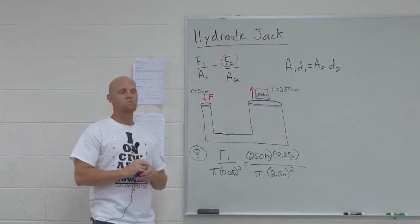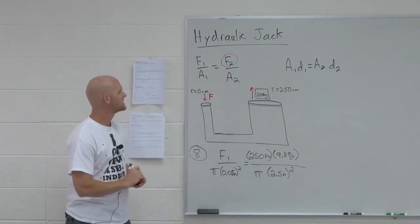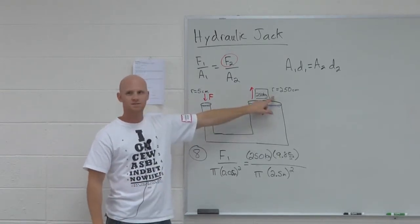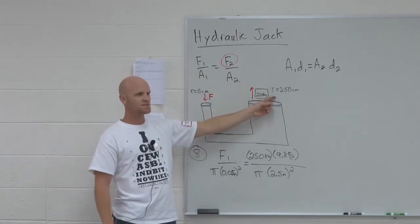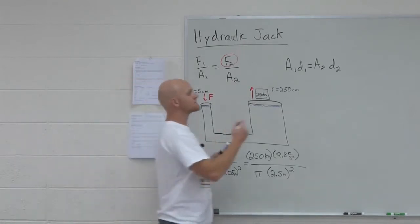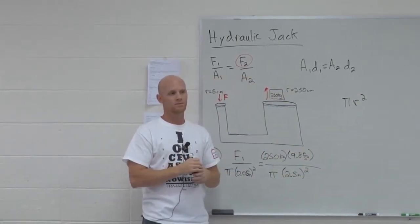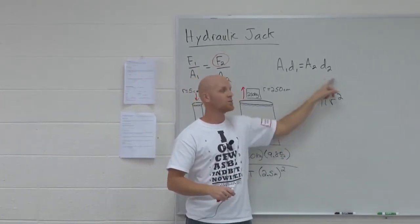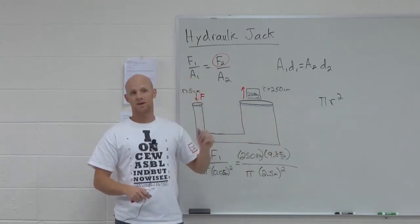We can actually do this one in our head if you want to. If you notice, how much bigger is the radius on this side? 50 times bigger. And with a 50 times bigger radius, how much bigger would its pi r squared be? Just the r is 50 times bigger. So how much would pi r squared be bigger on this side?